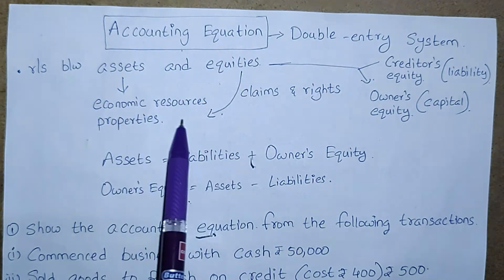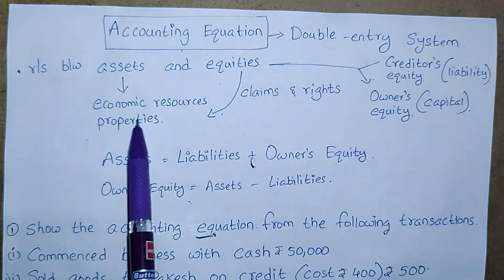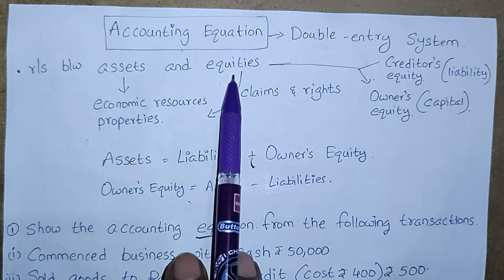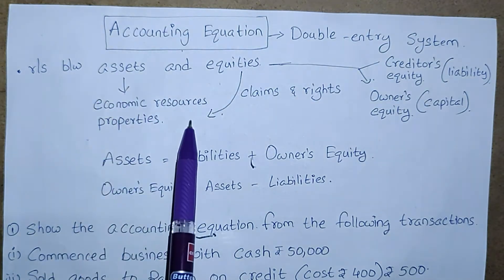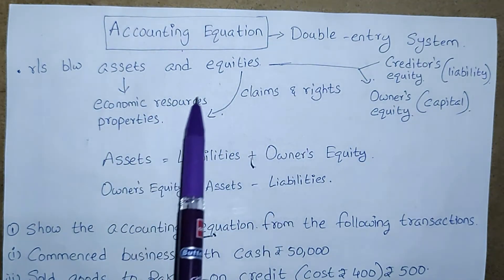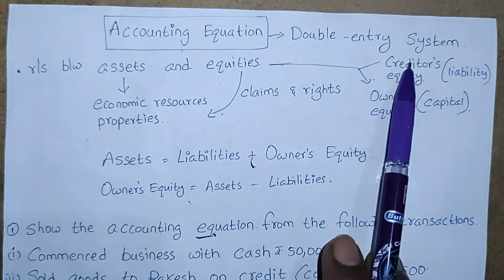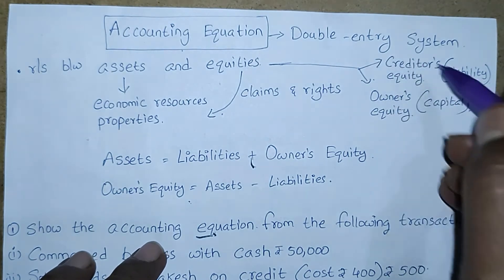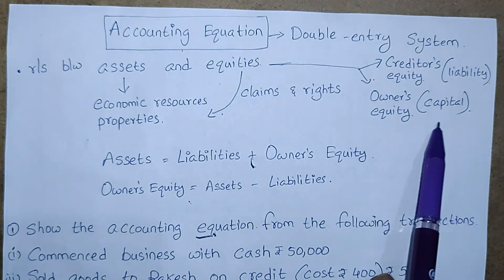Assets means economic resources or properties. Economic resources and properties are called as assets. The person who holds claims and rights over these assets is called equities. Claims and rights of these economic resources and properties are called equities. These equities are classified into two types: creditor's equity, called as liability, and owner's equity, called as capital.